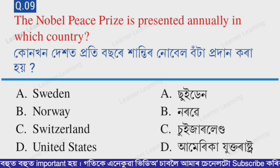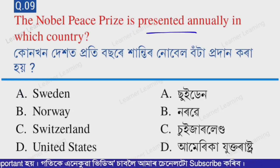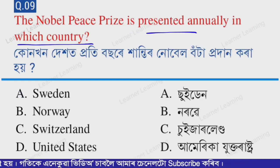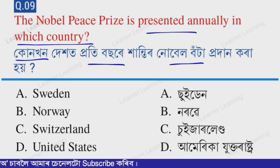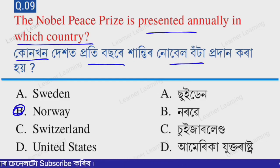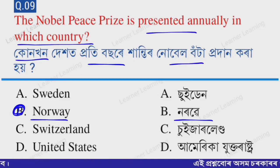Next question: The Nobel Peace Prize is presented annually in which country? The correct option is option B — Norway. The Nobel Peace Prize is presented annually in Norway.